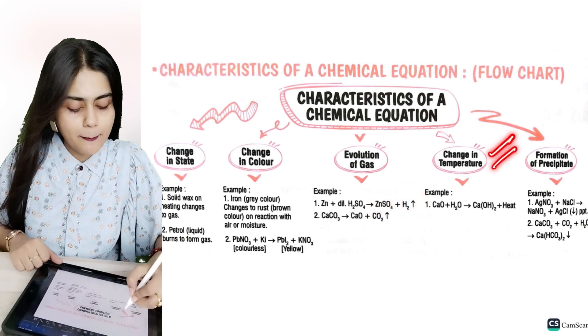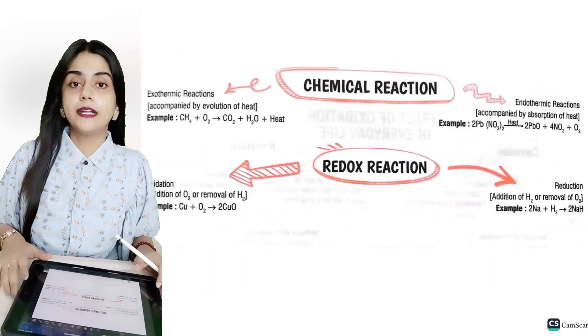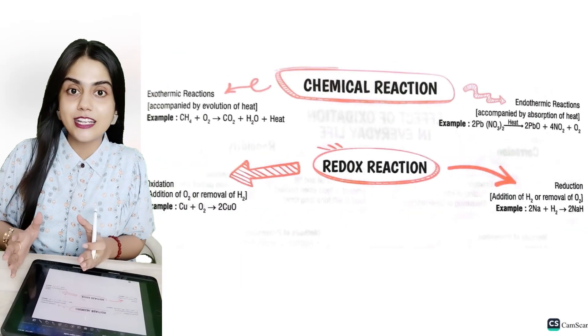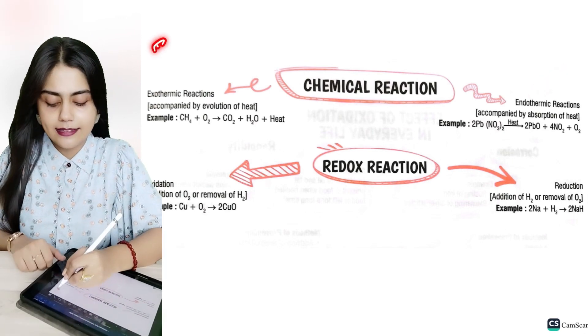When we talk about change in temperature, how does it change in temperature? That's why we read two types of reactions in this chapter. First, it is exothermic reaction. Then, the other type of reaction is endothermic reaction. Exothermic, understand the name. Exit.